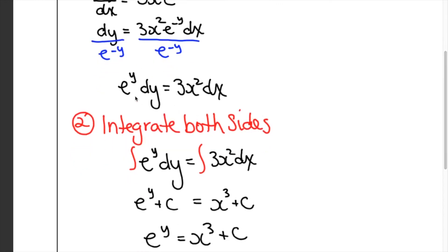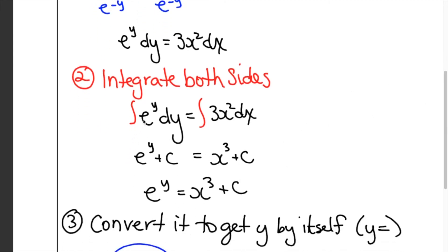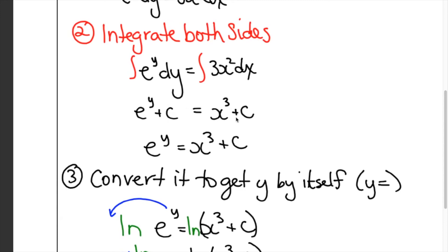Now that I have all the y's together and all the x's together, I integrate both sides. The integral of e to the y dy is e to the y plus c, and the integral of 3x squared dx is x cubed plus c. Combining the two constants together gives e to the y equals x cubed plus c.